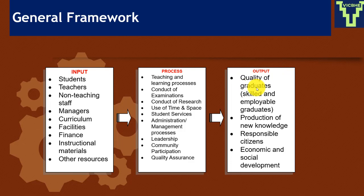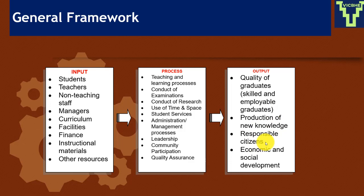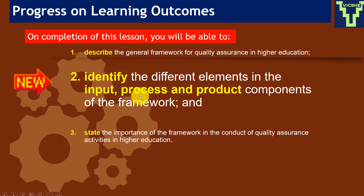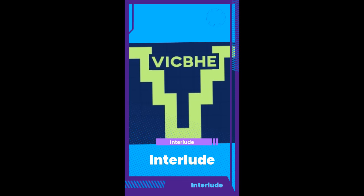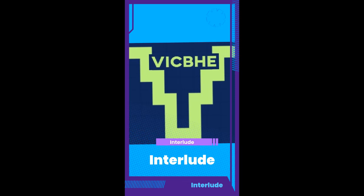When the inputs are mixed together in the process, the output is the quality of graduates, production of new knowledge through research, responsible citizens, and economic and social development. So we have identified the different elements in the input, process, and output components of the framework. Let's go on a short break, and when we return we'll go deeper into each of these elements.